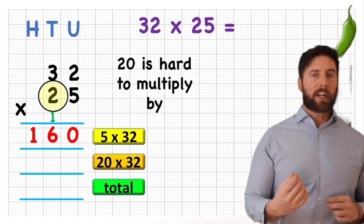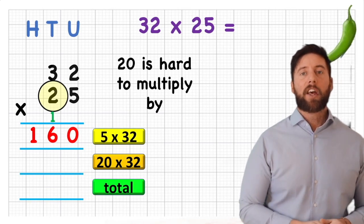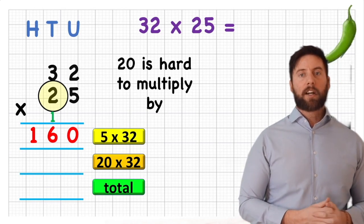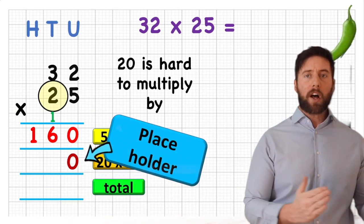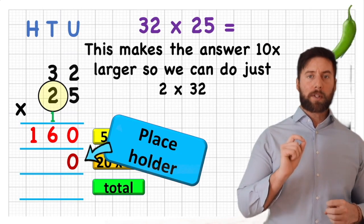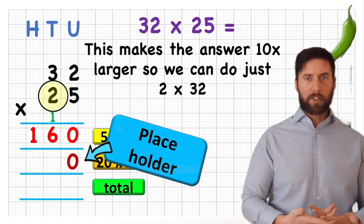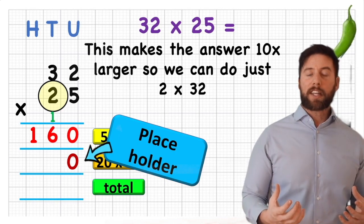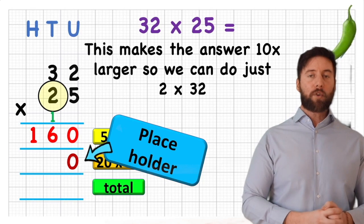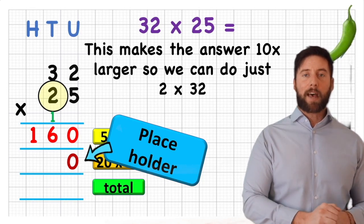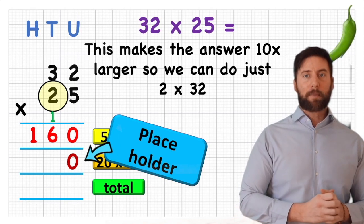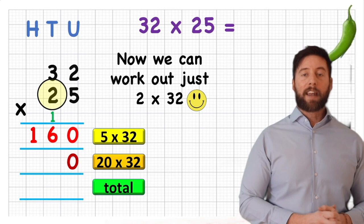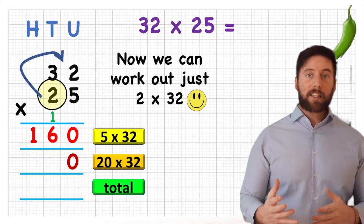Now I'm going to do 20 times 32, but I don't want to look at it as a 20. Here's the key difference with this method: we're going to include what's called a placeholder. We want to make this question 10 times smaller to work with, so instead of 20 times 32 we're going to do 2 times 32, and to compensate we make our answer 10 times larger. We do that by putting a placeholder zero in the units column. So we put this placeholder in, and now we can treat it as 2 times 32.